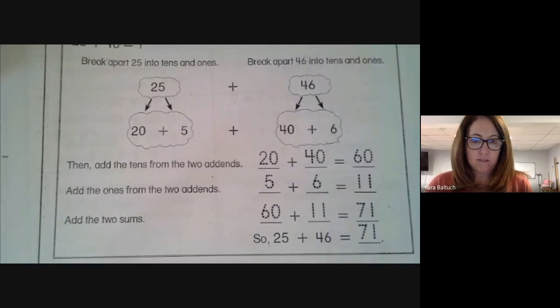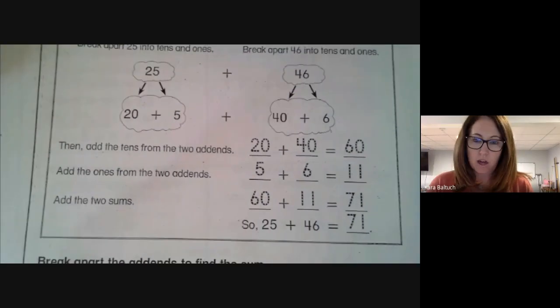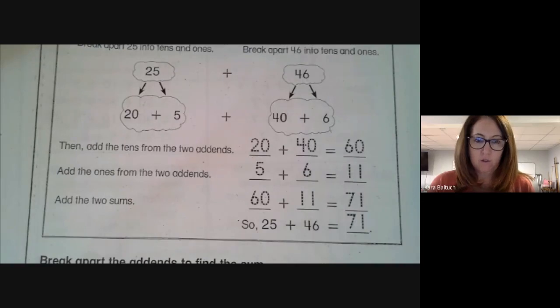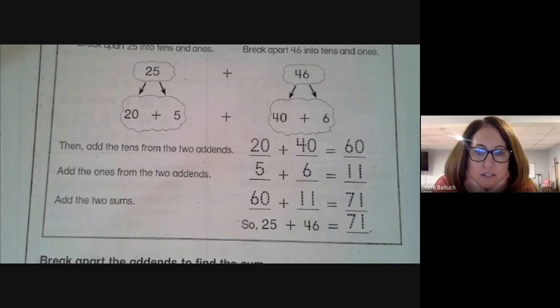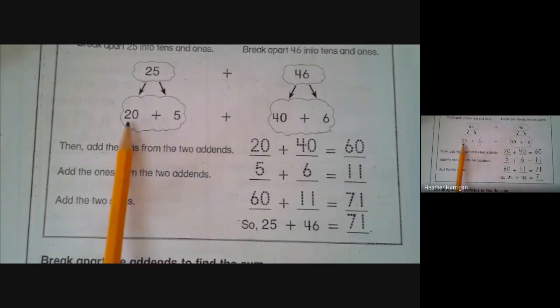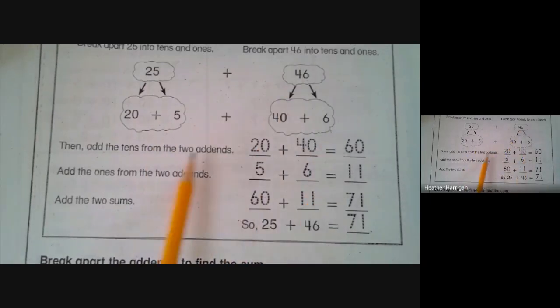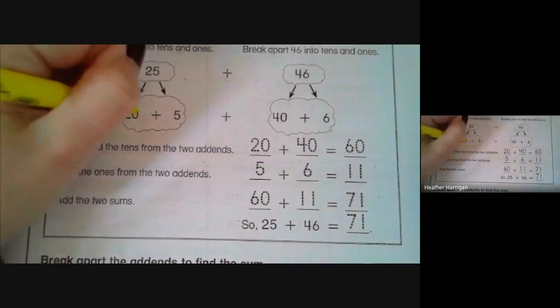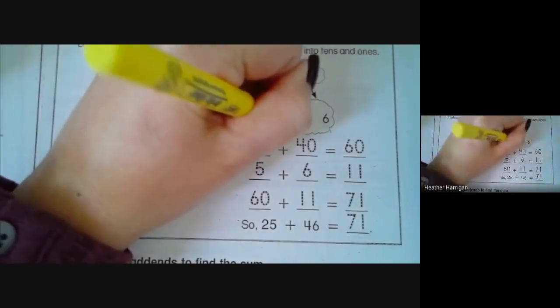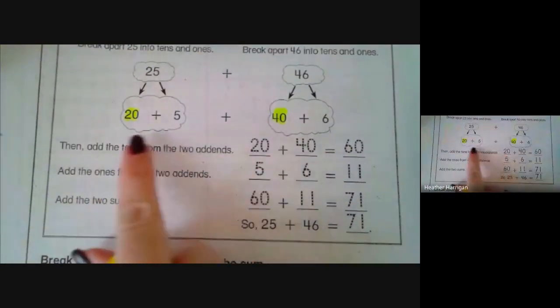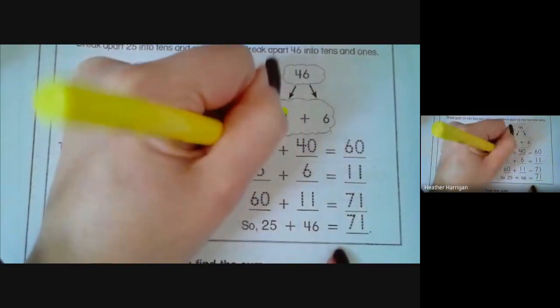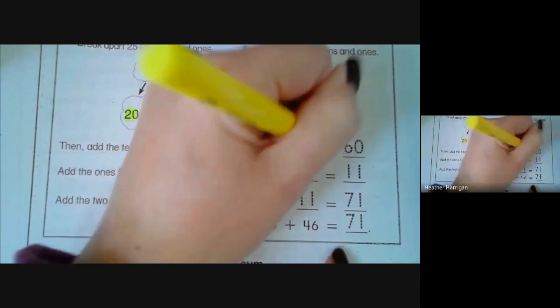You probably saw your students do this a lot when we talked about expanded form in our place value unit. So 25 is broken into 20 plus 5, and 46 is broken into 40 plus 6. We would take our two numbers that are multiples of tens, 20 and 40, and add those two numbers together. 20 plus 40 equals 60.